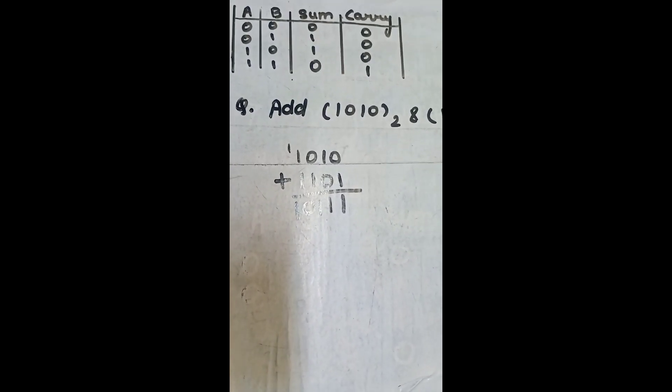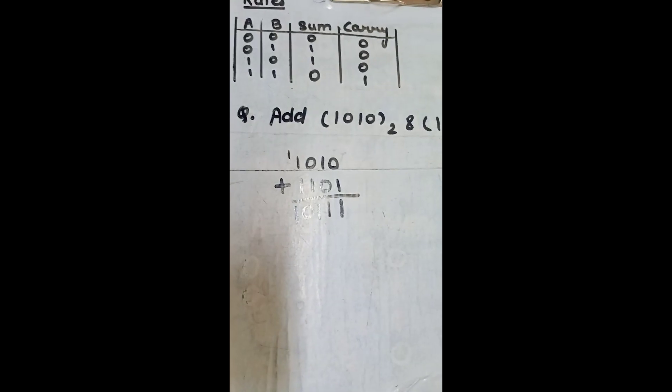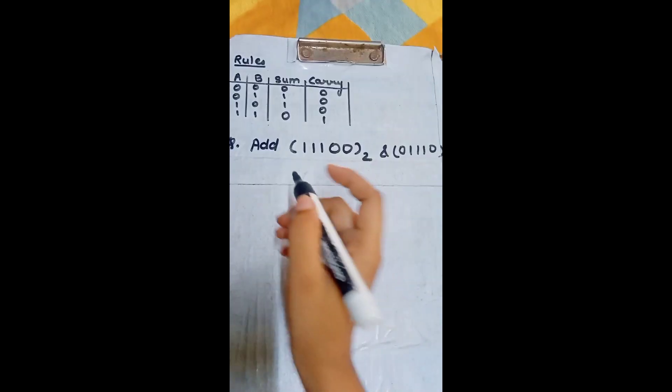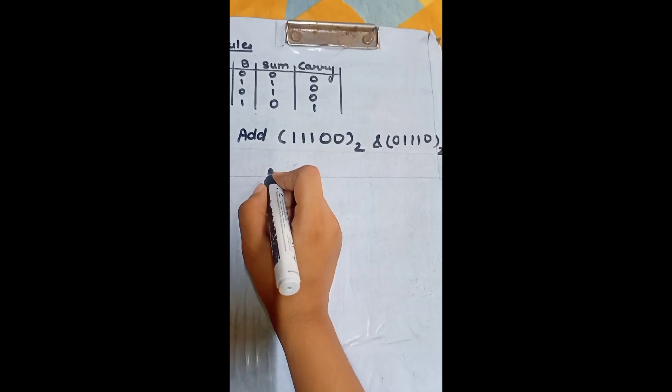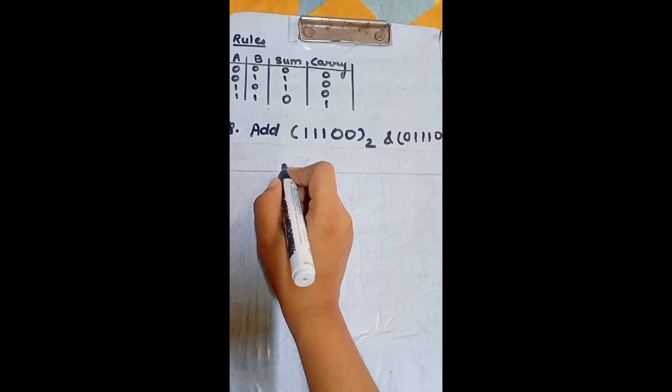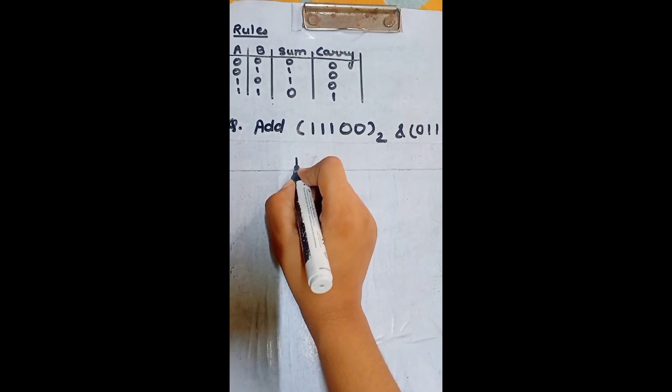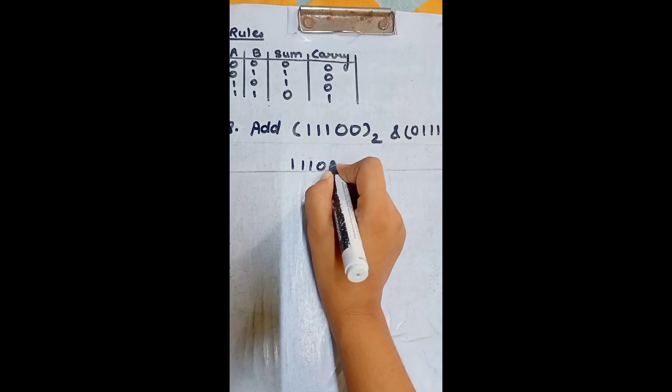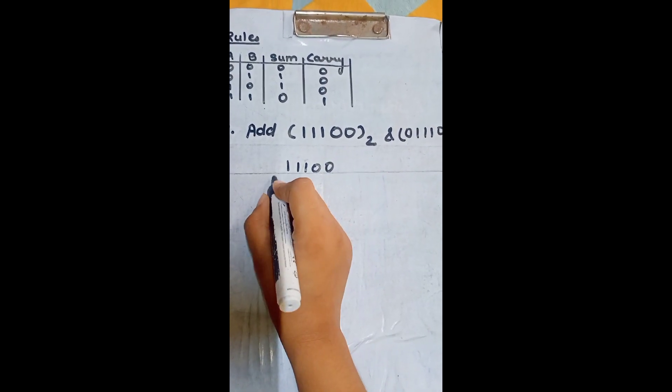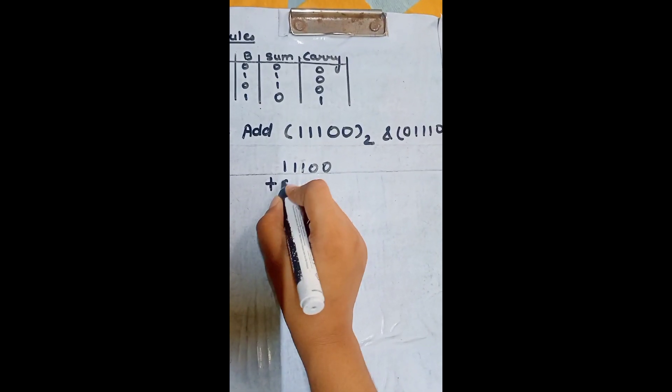I will explain you this with a big example so that you can understand it easily. So, we will see by adding these two binary numbers. So, 1, 1, 1, 0, 0